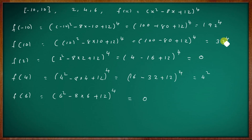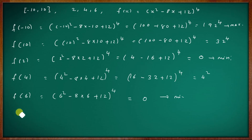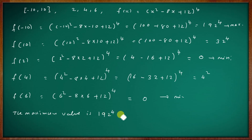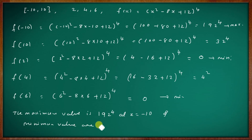The maximum value is 192⁴ at x = -10, and the minimum value is 0 at x = 2 and x = 6.